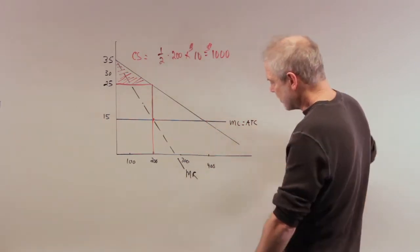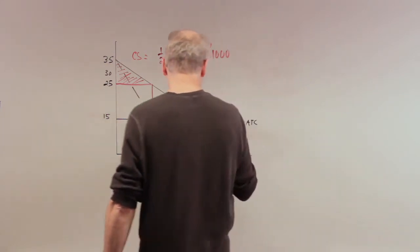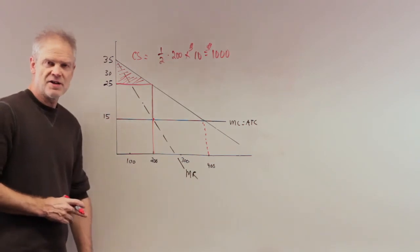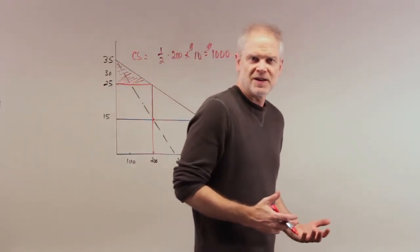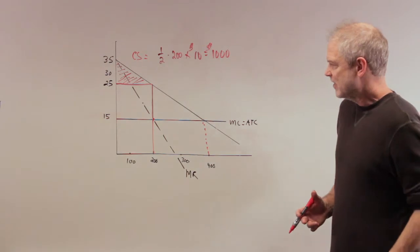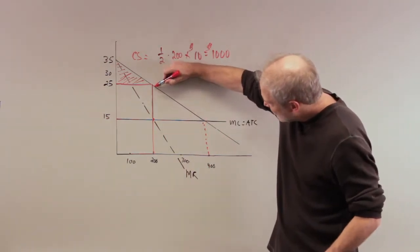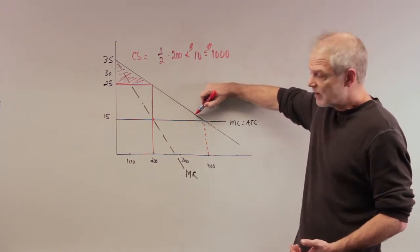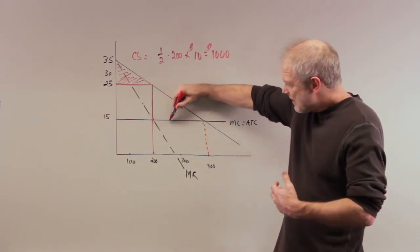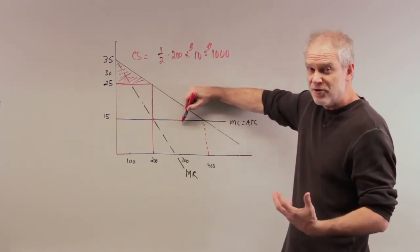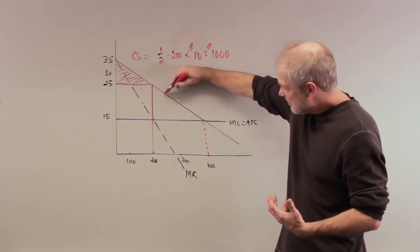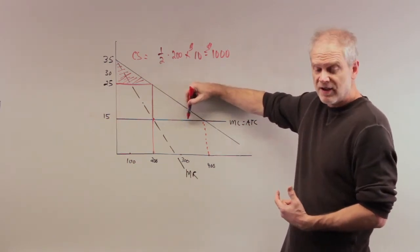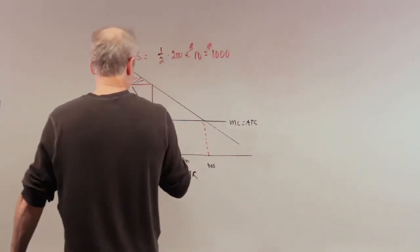The price will be fifteen dollars. What's the loss to society of having a monopolist run this market? All these people who are willing to pay a price higher than the marginal cost of fifteen dollars couldn't buy it. Marginal cost shows you the opportunity cost of using these resources to produce this good. People are willing to pay more than the marginal cost, meaning they value it at more than it costs society to produce it. All this is deadweight loss.